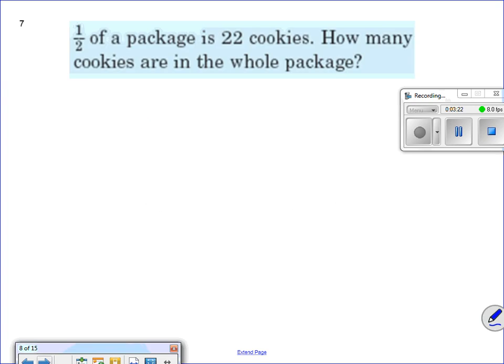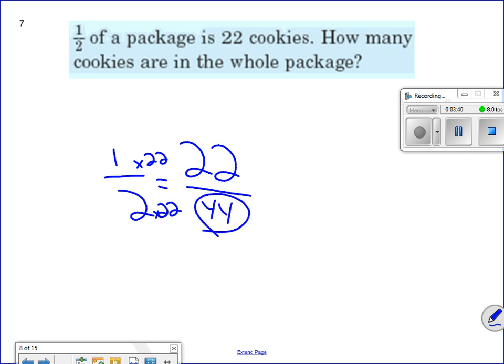Half of a package is 22 cookies. How many cookies are in the whole package? Let's take a look here. So 22 would be my numerator, because it's not the whole. Half into 22. Times 2 gives me 44. So what is the whole package? 44 cookies. There's another one.